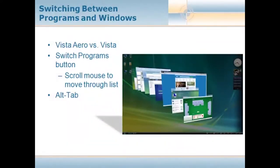When switching between programs, let me back up for those who are newer — in Windows Vista you can have more than one program running at the same time, each in different windows. You might have five Word documents, a solitaire game, and a chat session all going. How switching works depends on your hardware. If you're running the Vista Aero experience you'll see it one way; if running regular Vista without transparency and glass effects you'll see different screens. The oldie-but-goodie Alt+Tab still works.